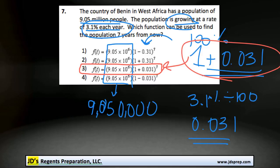And, of course, the exponent of 7 is because that's for the 7 years that the population is increasing for. All right, and that's all for this video. Thanks for visiting JD's Regents Preparation.